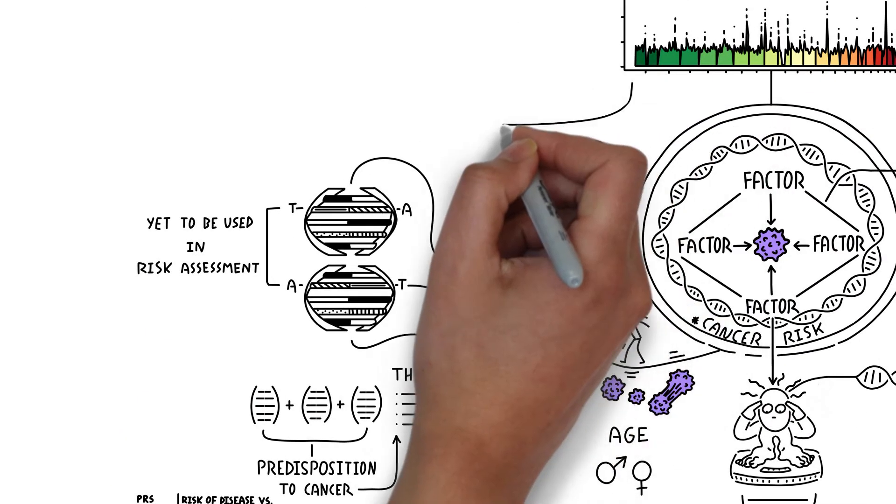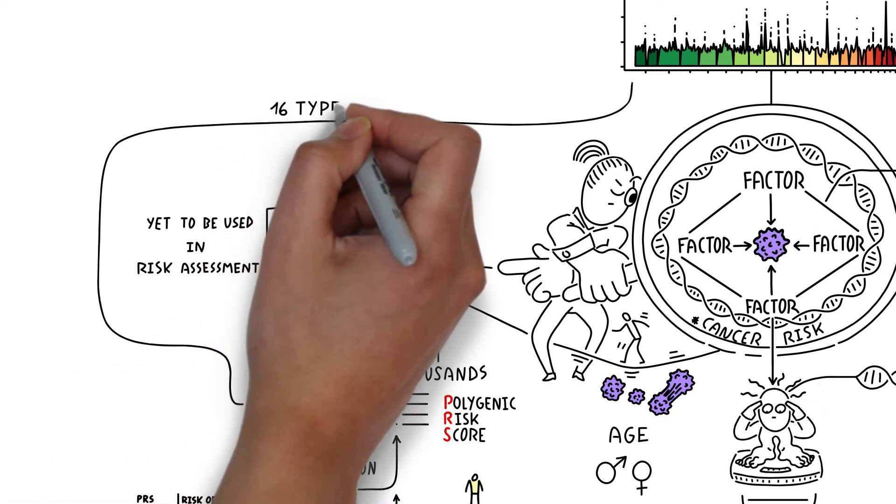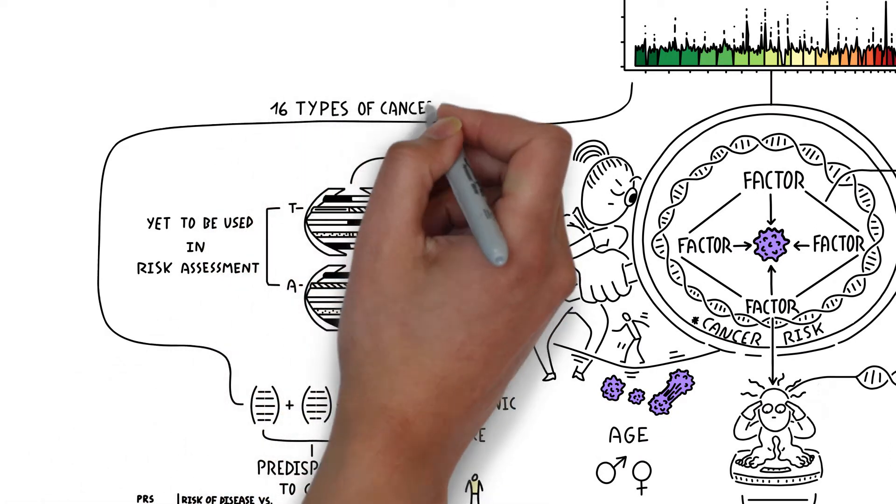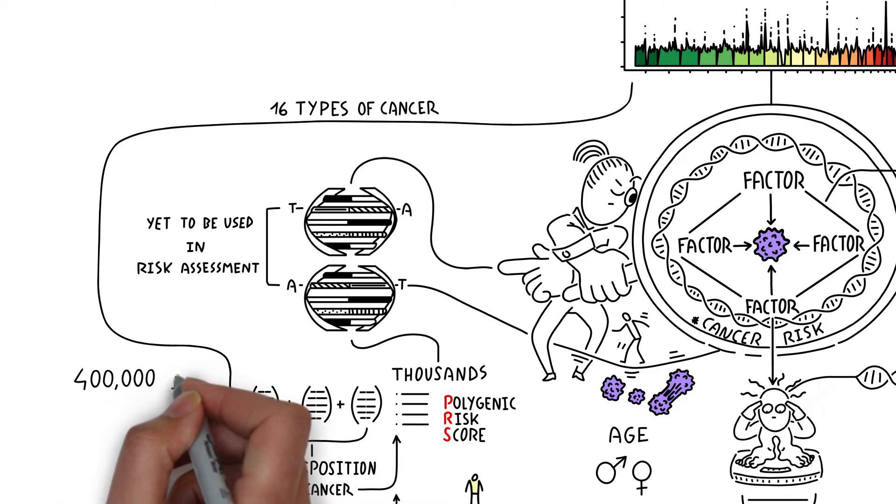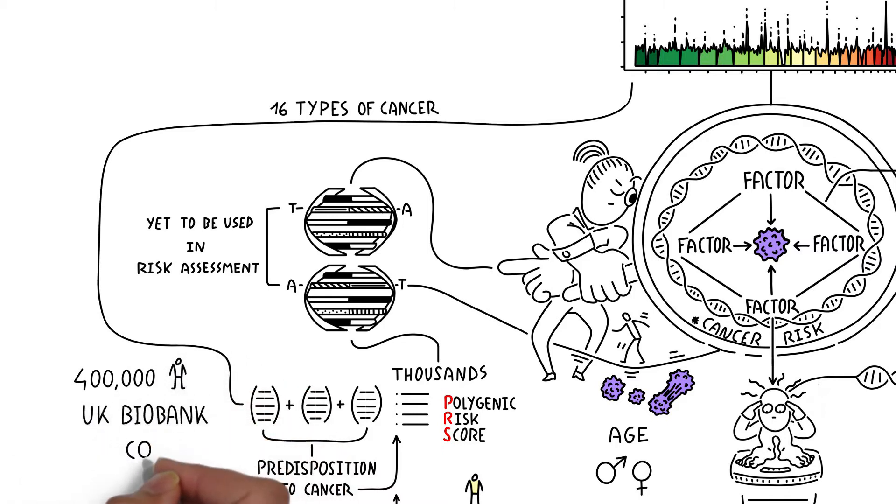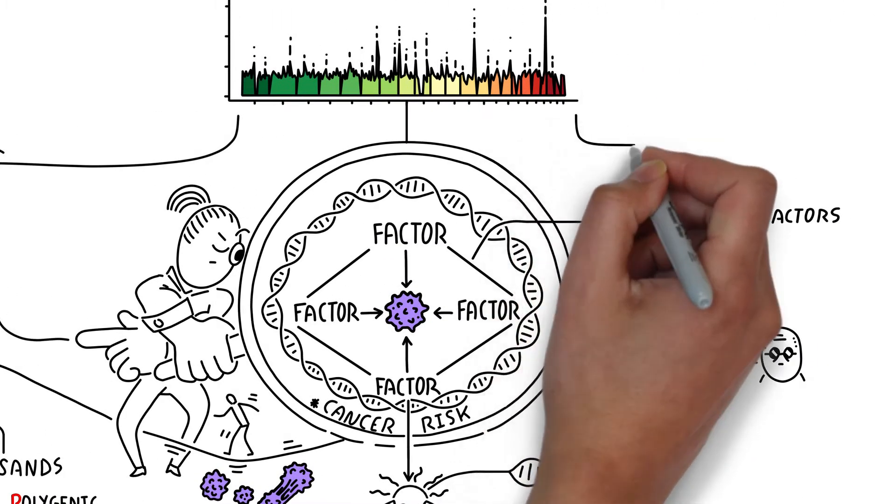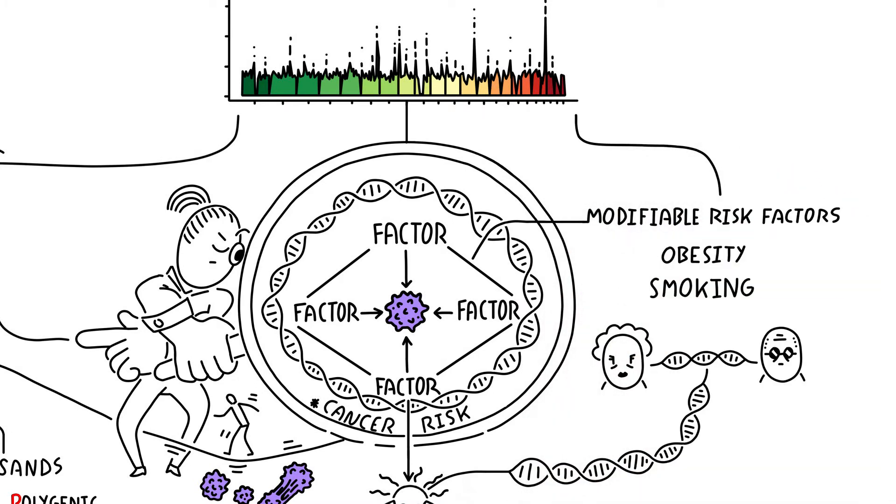In this study, we constructed polygenic risk scores for 16 different cancers, using results from all previous genetic association studies, and then estimated the risk of developing each cancer in over 400,000 participants in the UK Biobank cohort. In addition to genetic data, we also included information on the most important modifiable risk factors for each cancer.